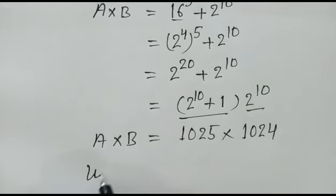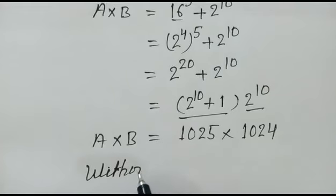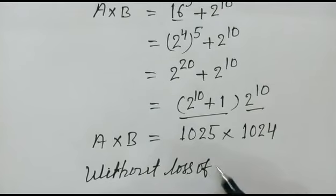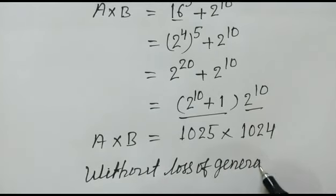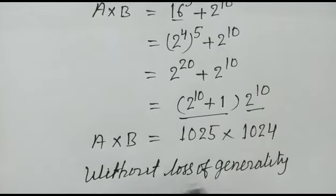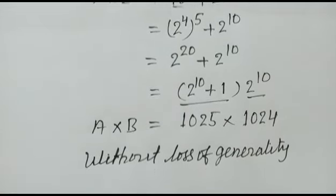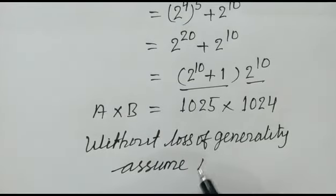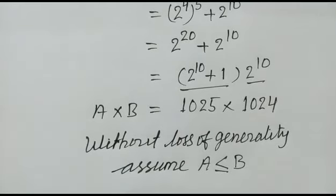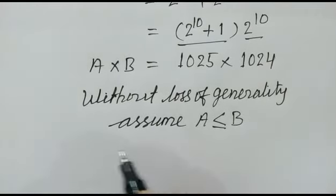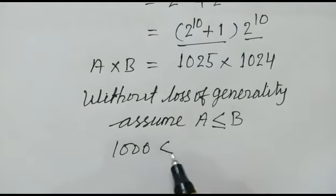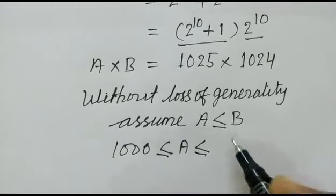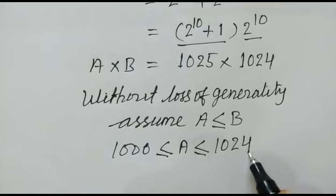Now without loss of generality, we can assume A is less than or equal to B. So 1000 is less than or equal to A is less than or equal to 1024.